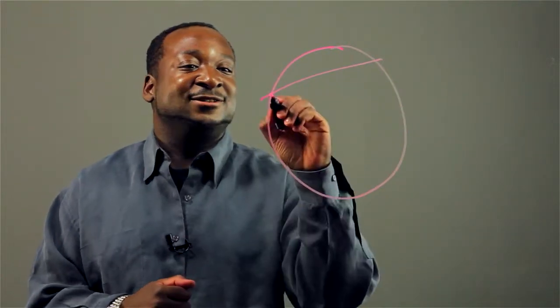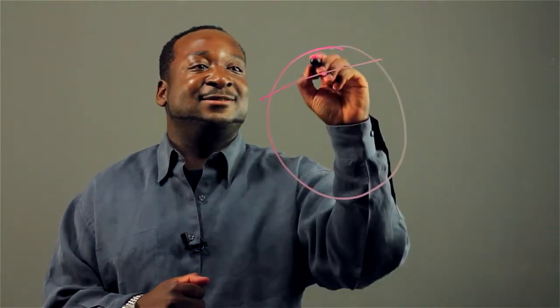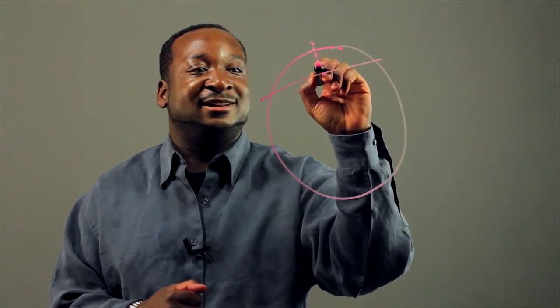Now what I'm going to do is I'm going to find the midpoint, go to the midpoint of this line, and then I'm going to pass a perpendicular line through it.